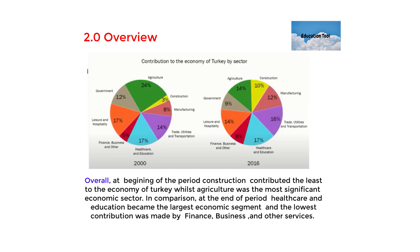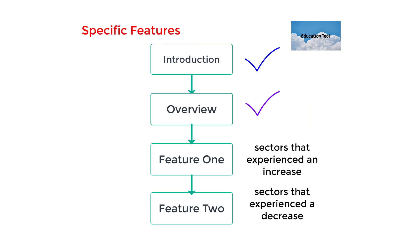If you want to get an overall band of seven, you have to write the word 'overall' because it shows the reader that you're going to talk generally about the overview. Instead of writing '2000' again and again, I have written 'at the beginning of the period.' Similarly, I wrote 'at the end of the period' instead of '2016' — it's better to avoid repetition. I also used the passive form, for instance 'the lowest contribution was made by finance, business, and other services,' which shows the reader that you have good grammar.